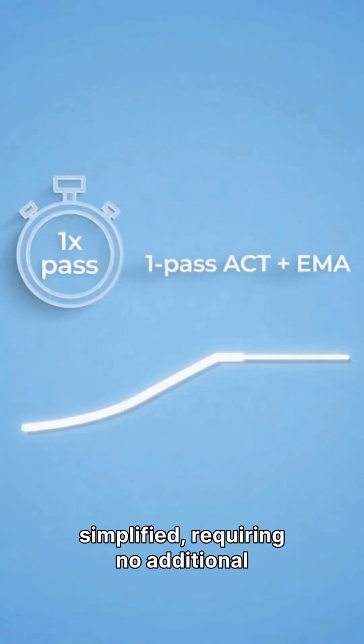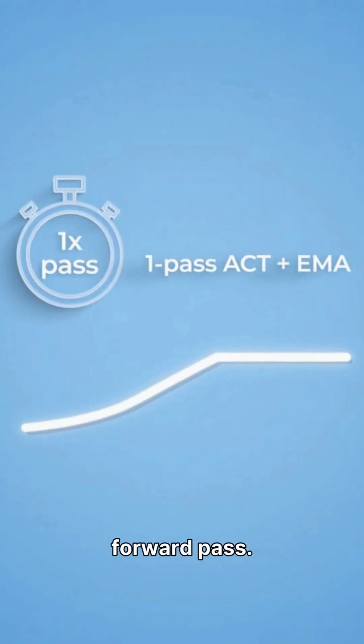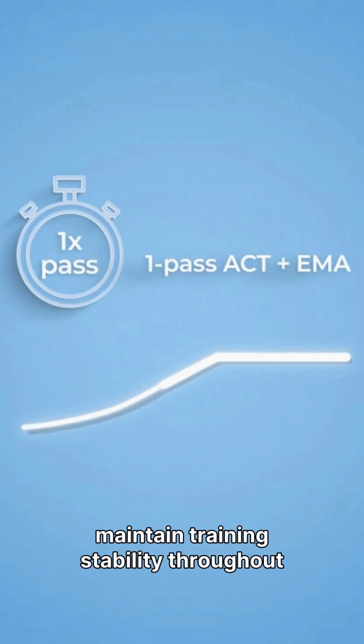The halting mechanism is simplified requiring no additional forward pass. Furthermore, exponential moving average weights are employed to maintain training stability throughout the process.